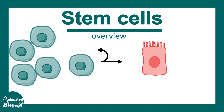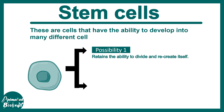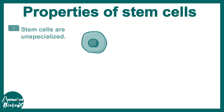In this video we'll be talking about stem cells — this is an overview, and in subsequent videos we are going to delve deep into aspects of stem cells. Stem cells are cells that have the ability to develop into many different cell types. One stem cell can either self-renew and recreate itself, or it can generate progeny that is capable of producing a differentiated cell type. These are two important properties of a conventional stem cell.